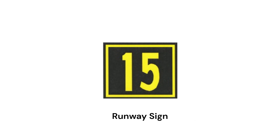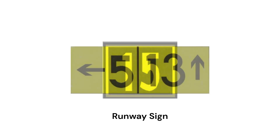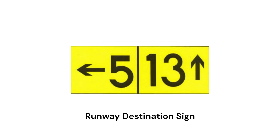For example, if a pilot saw this sign, they would be on runway 1-5. Black numbers on a yellow background are destination signs and indicate common taxi routes for the runway or runways specified.